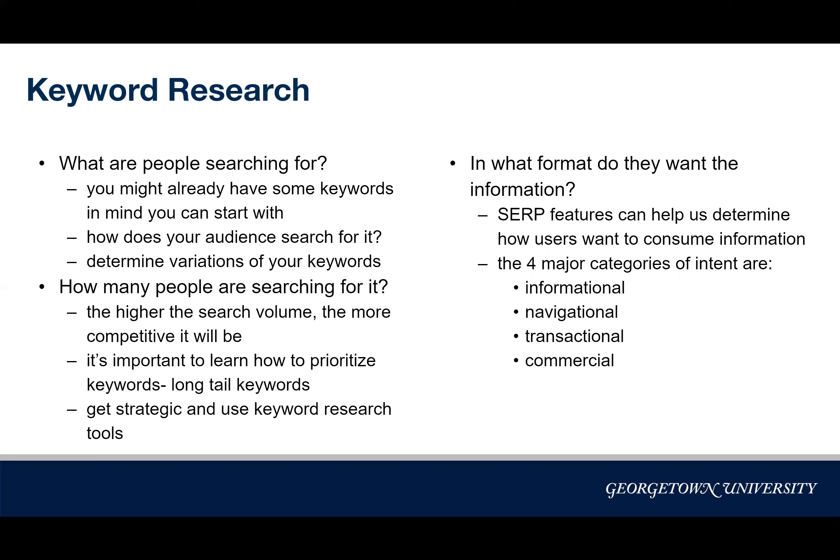You should also refer back to how your audience might be searching for information. Think about their goals and needs and the kind of questions they might be asking. Once you have a base list of keywords, you can then determine variations to add variety to your list. You can use keyword research tools, or you can use Google's autocomplete function and look at the related searches on the bottom of the search engine results page.